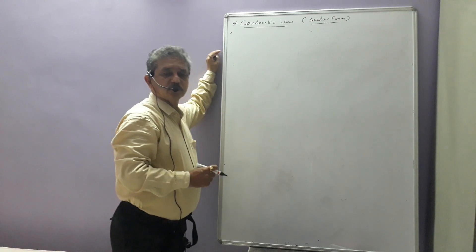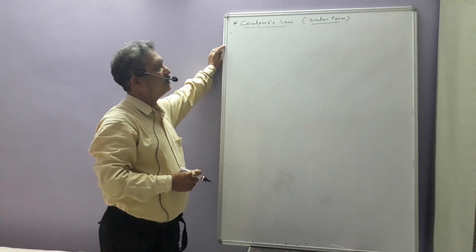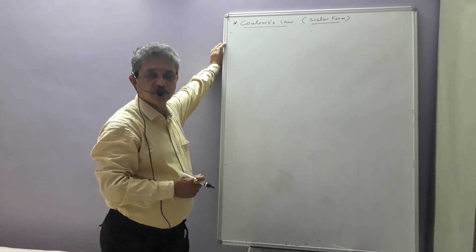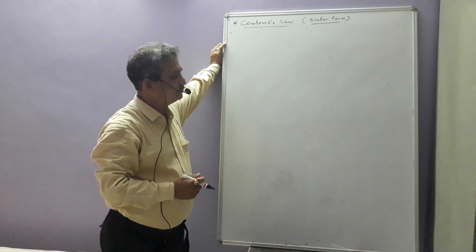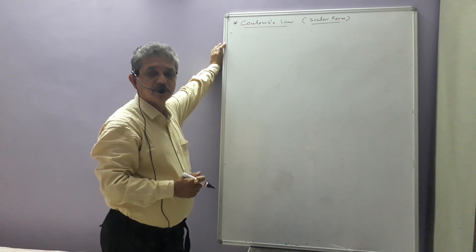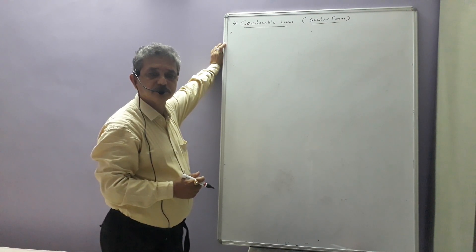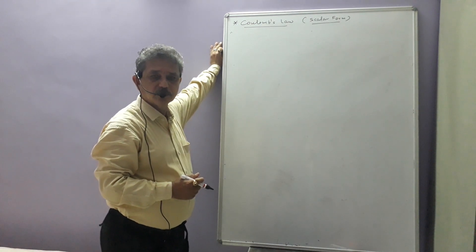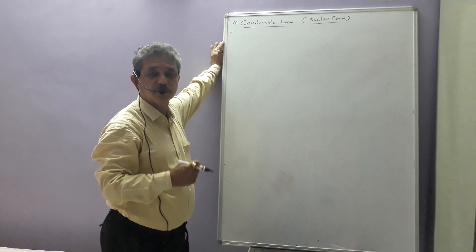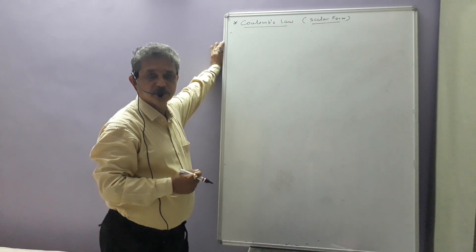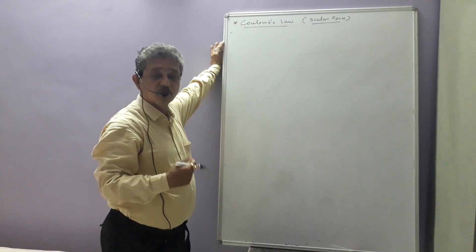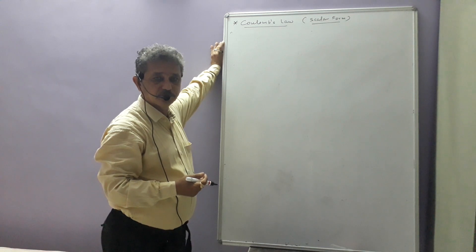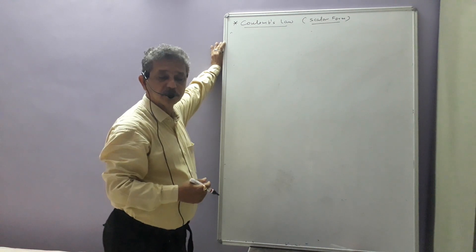Now we will discuss Coulomb's Law in scalar form. There was a French scientist, Charles Augustin Coulomb, in the year 1785. He performed many experiments to measure the electric force between charged bodies, and from his observations he formulated a law in mathematical form.